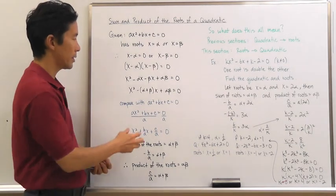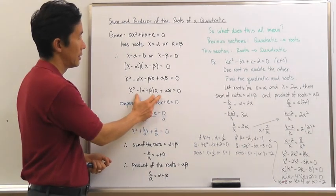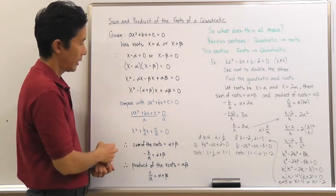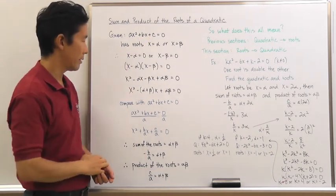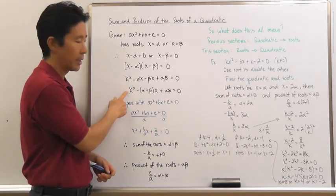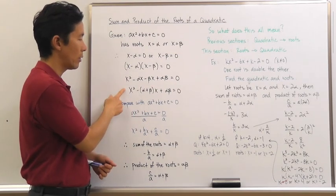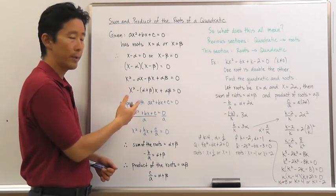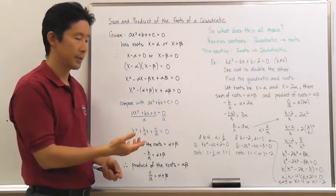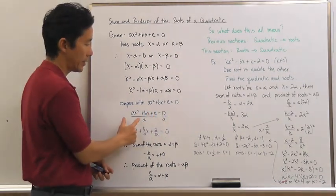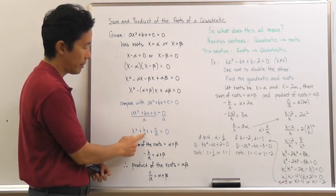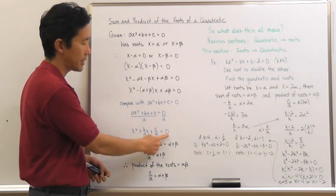Now what I'm going to do is compare this to what I started off with — the equation that generated these roots. The only issue is that the coefficient of my quadratic term is not the same: here it's a and here it's one. So in order to make a better comparison between these two equivalent equations, I need to divide both sides of the equation by a, so that I come up with x² + (b/a)x + (c/a) = 0.